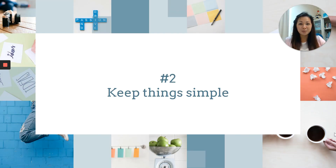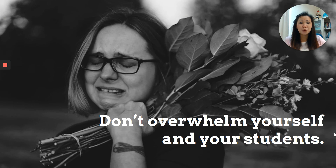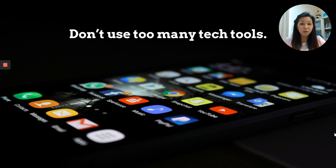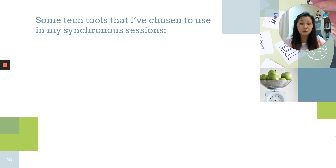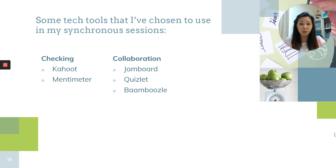Tip number two is to keep things simple. Don't overwhelm yourselves or your students. There are many tech tools available, but try not to use too many. The tools I've chosen specifically for my synchronous sessions include: Kahoot and Mentimeter for checking understanding; Jamboard, Quizlet, and Bamboozle for collaboration — I'll share in another video how I use these tools. And for communication, I have a WhatsApp chat group with my students.